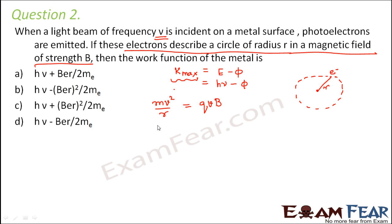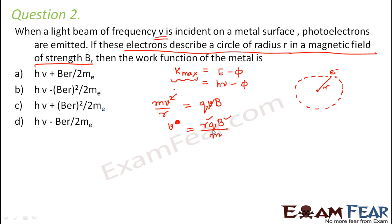From mv²/r = qvB, cancelling one factor of v gives v = rqB/m. Since r and B are given in the problem, this expresses v in terms of known quantities.